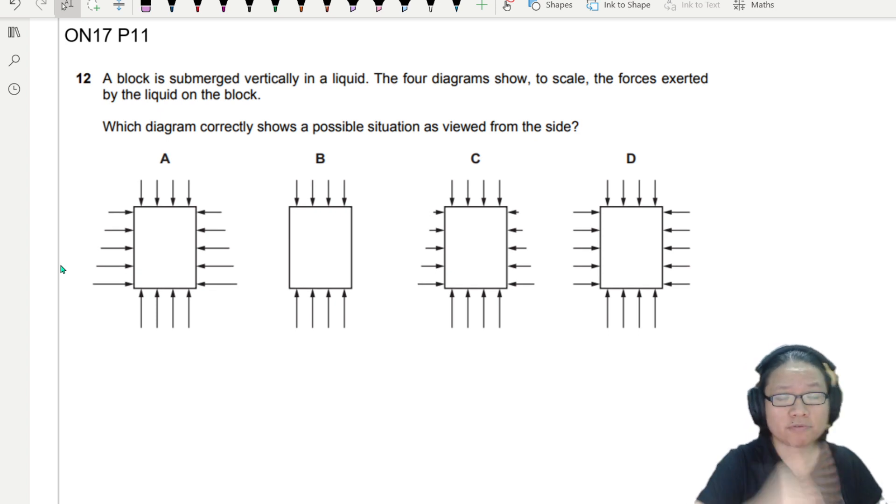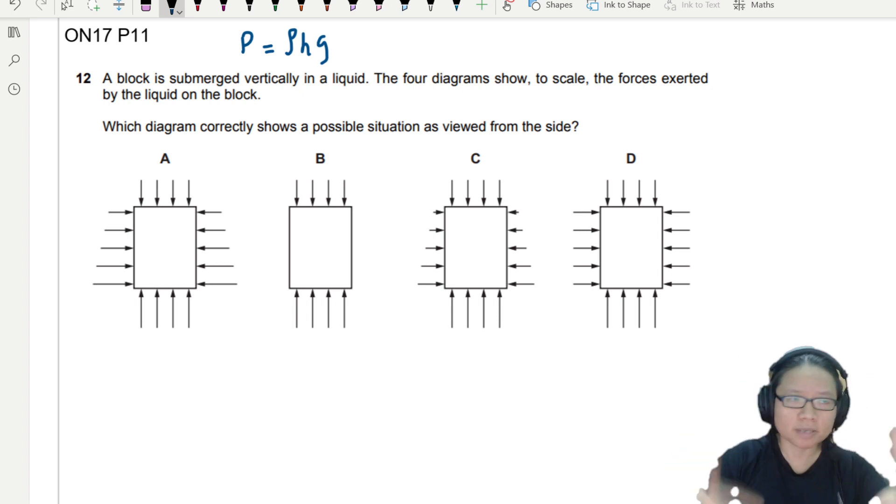So this is a past year paper from Winter 17, Paper 1-2. You can refer to it in your handouts or in your past year collection. We have a block submerged vertically in a liquid. So this is a continuation of our liquid pressure or fluid pressure where that pressure is given by the equation rho density times height, the immersed height times gravity.